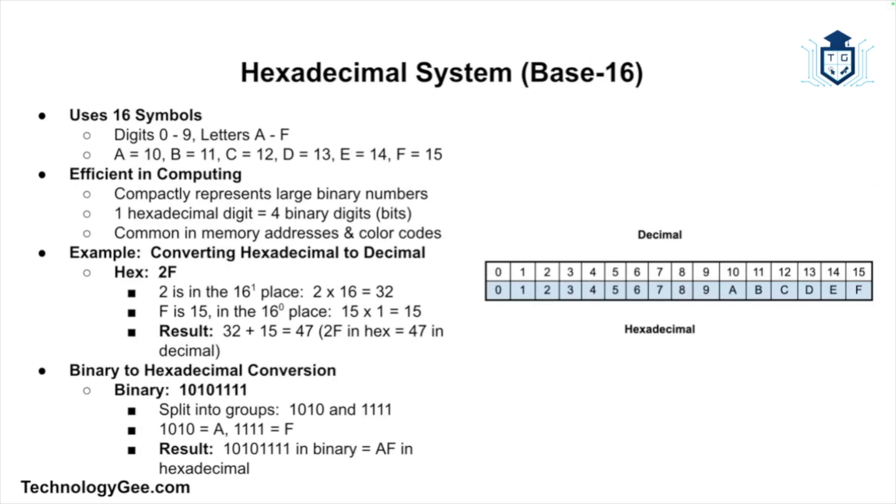Next up is the hexadecimal system or base 16. The hexadecimal system uses 16 symbols: the digits 0 through 9, followed by the letters A through F. The letters represent the decimal values 10 through 15. So A equals 10, B equals 11, C equals 12, D equals 13, E equals 14, and F equals 15.